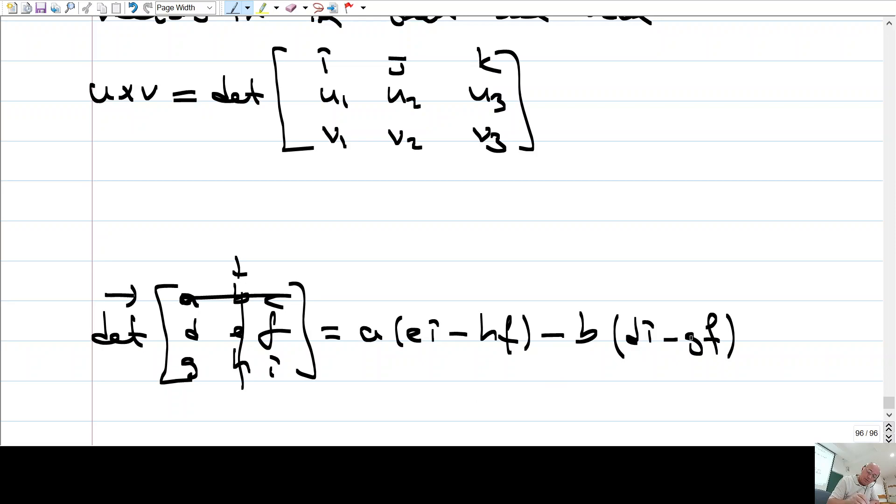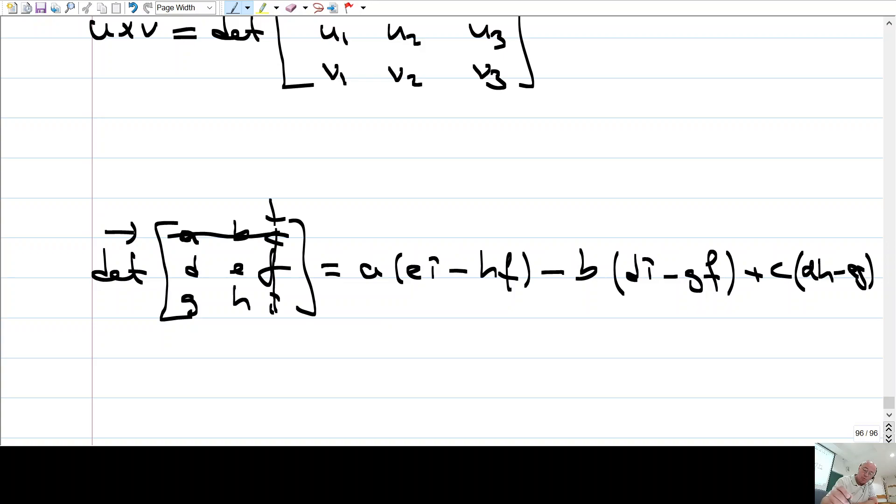And then you change sign again. Buna bakıyorsunuz. Artı C. Yani bir artı bir eksi gidiyor. Yine bunu ve bunu kapatıyorsunuz. Yani bu entry'yi içeren satırı ve sütünü kapatıyorsunuz. Geriye kalan matrisin determinantı. O da nedir? D times H minus E times G. Okay. So it is this expression determinant.